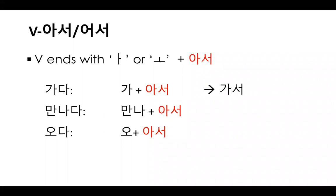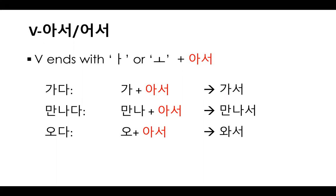만나다, to meet — stem 만나, there's a vowel 아, so attach 아서, making 만나서. 오다, to come — stem 오, there's a vowel 오, so you attach 아서 again, making 와서.